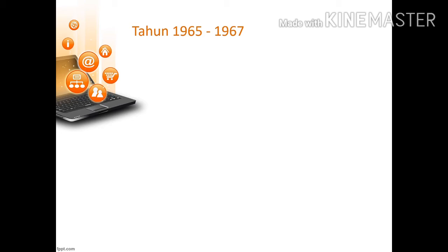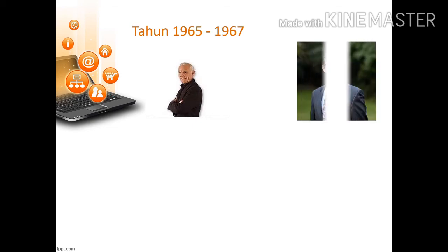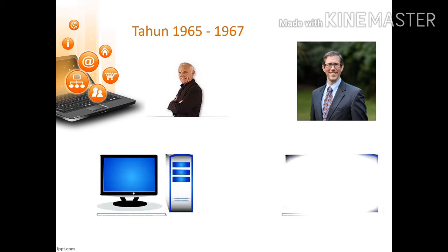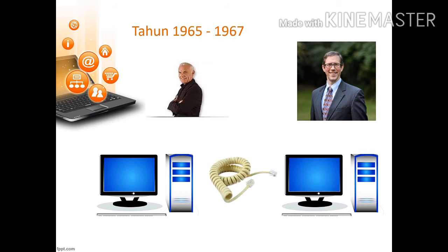Pada tahun 1965 sampai dengan 1967, sejarah perkembangan internet di dunia ditandai dengan munculnya suatu teknologi yang dapat menghubungkan dua buah komputer yang berjarak jauh. Pertama kalinya dikenal oleh Lawrence J. Robert dan Thomas Merrill. Mereka berdua menghubungkan dua buah komputer yang terletak di California dan Massachusetts dengan menggunakan kabel telepon, dengan jarak yang sudah cukup jauh.